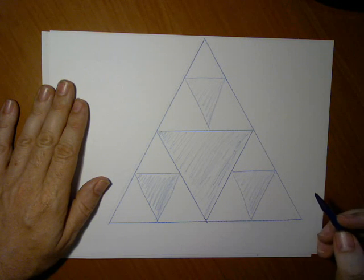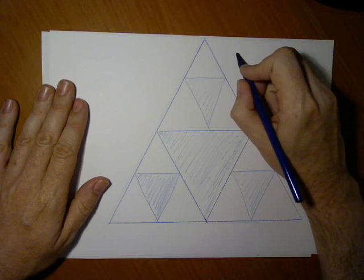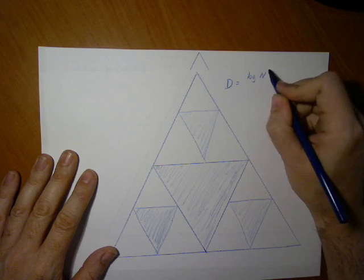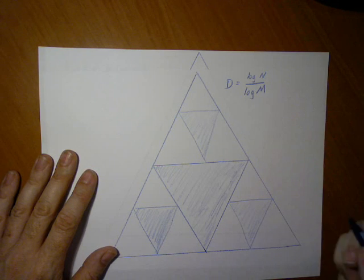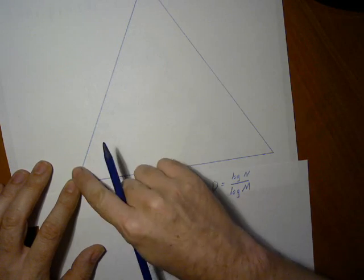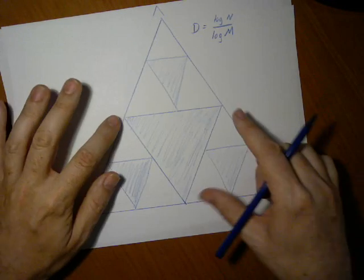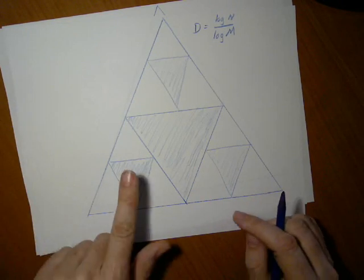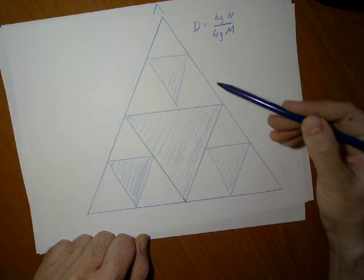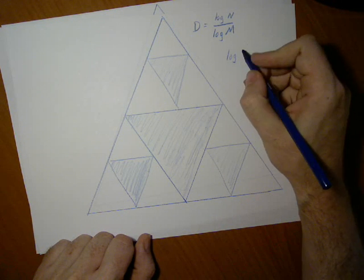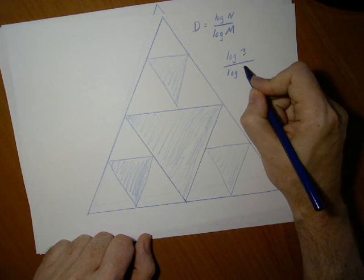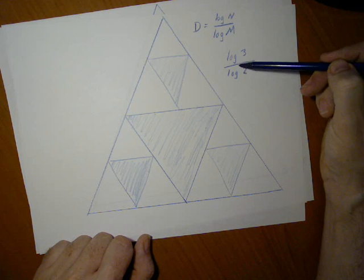In order to calculate the Hausdorff fractal dimension, we calculate d equals log n over log m. If we go from a factor with our initial triangle and remove the center piece, this would be our first triangle, this our second, and this our third. We can write log 3 because there are three similar triangles when the magnification factor is 2. This is an exact value for the Hausdorff dimension.